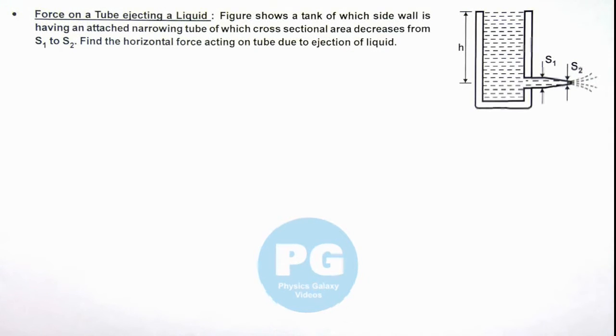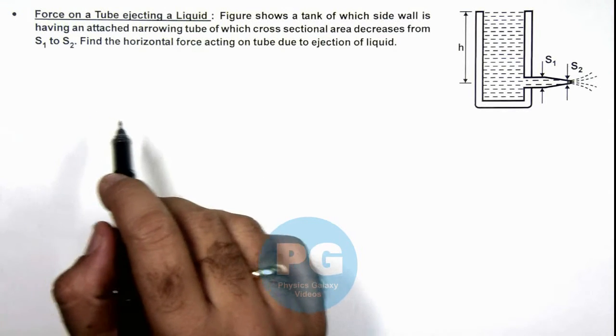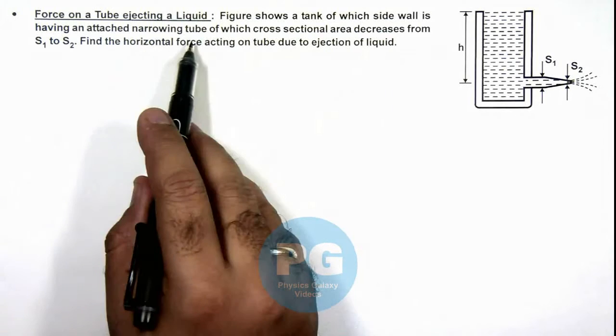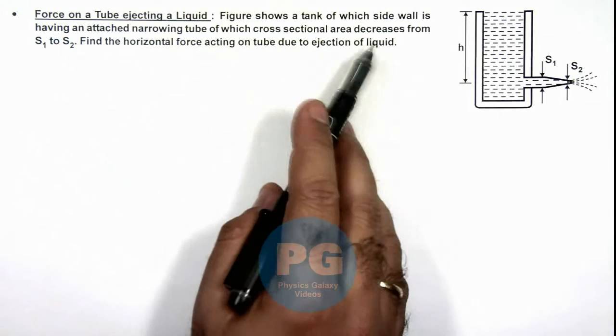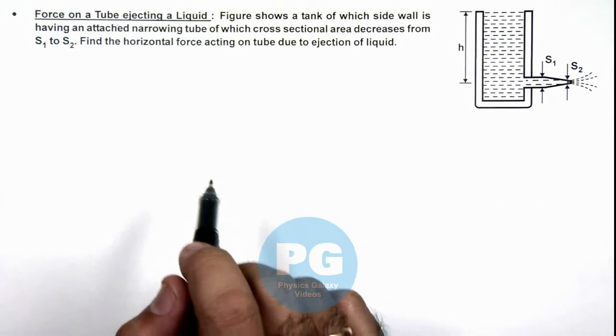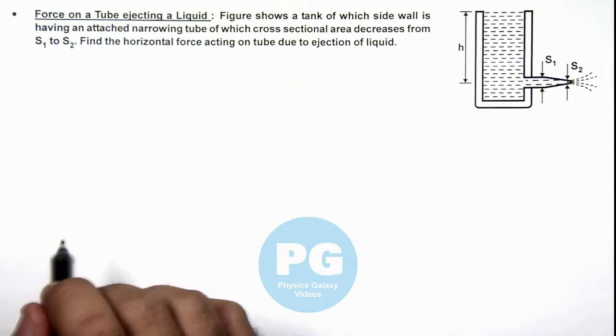In this illustration, we'll be calculating the force on a tube ejecting a liquid. The figure shows a tank of which side wall is having an attached narrowing tube of which cross sectional area decreases from S₁ to S₂, and we are required to find the horizontal force acting on the tube due to ejection of the liquid.